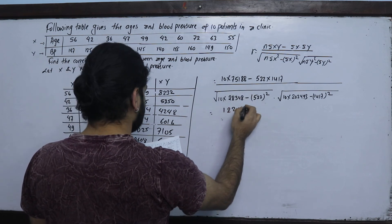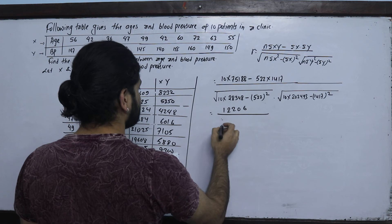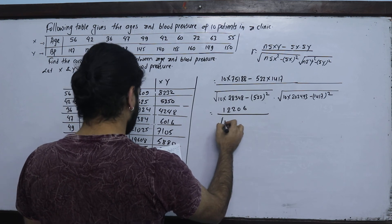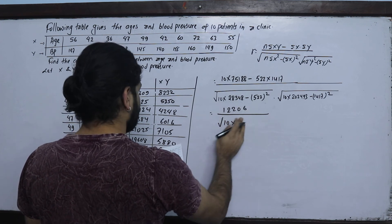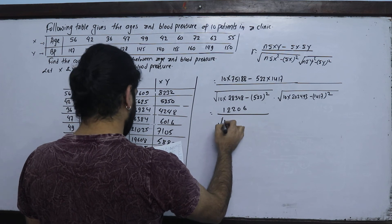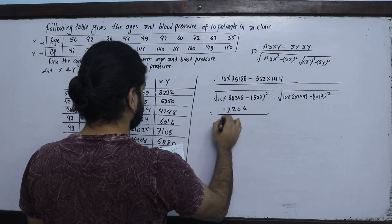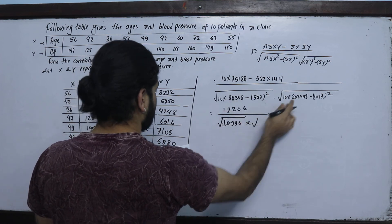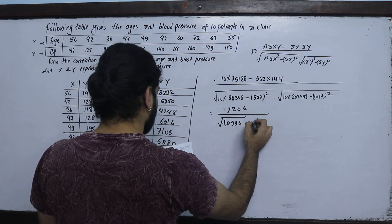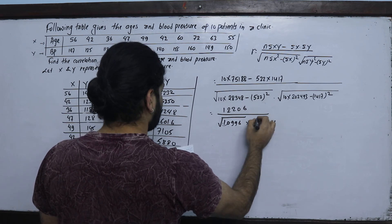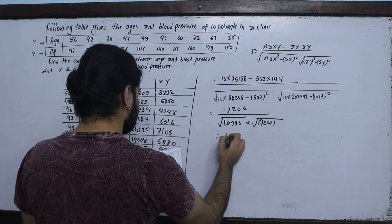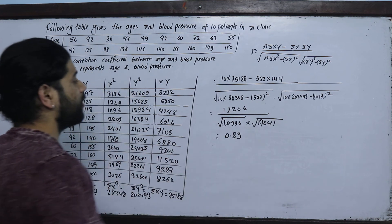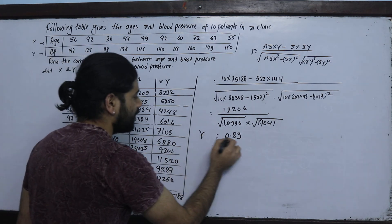Simplifying: the numerator is 751880 minus 739674, which equals 12206. The denominator square root gives us 13705.89. Therefore, r equals 12206 divided by 13705.89, which equals 0.89. r is positive.